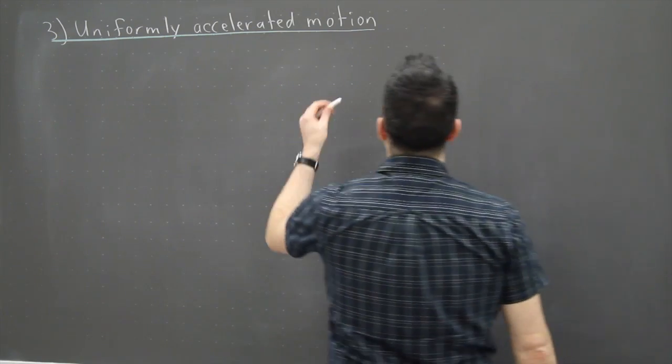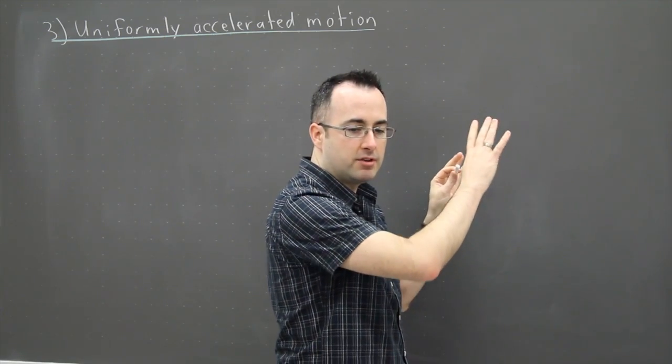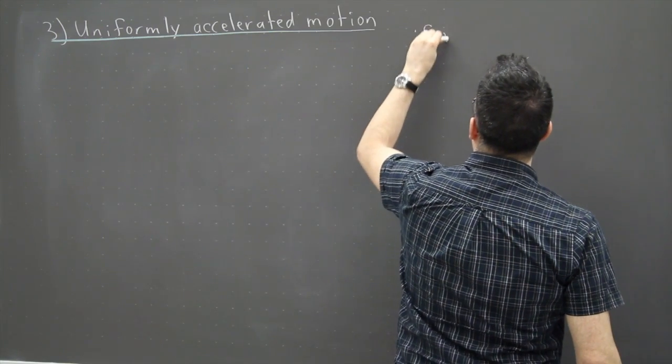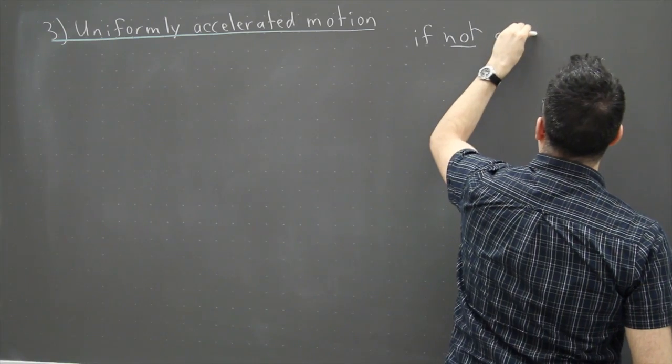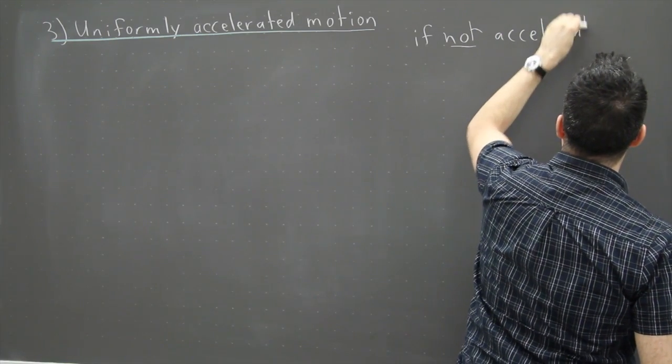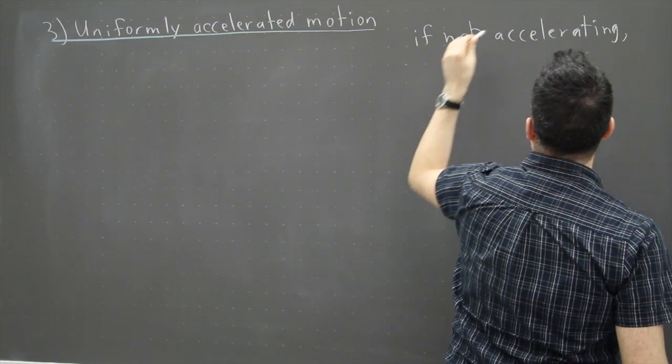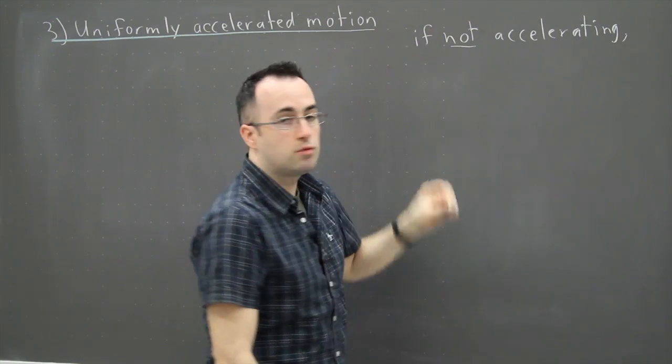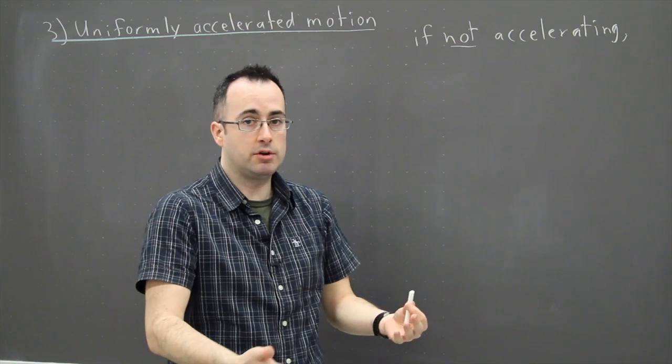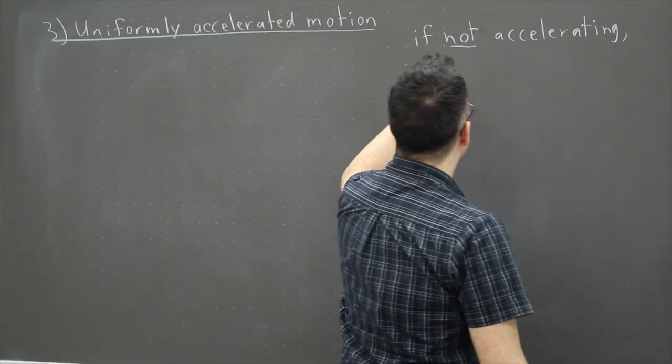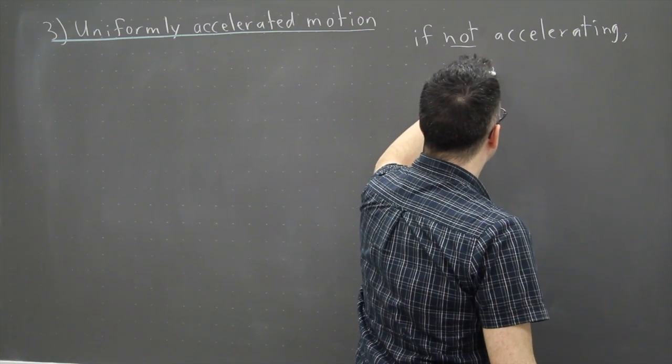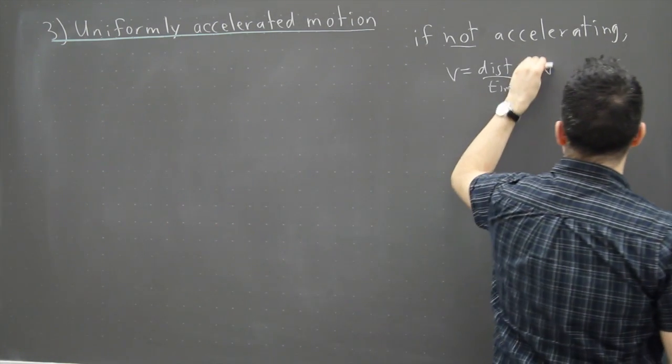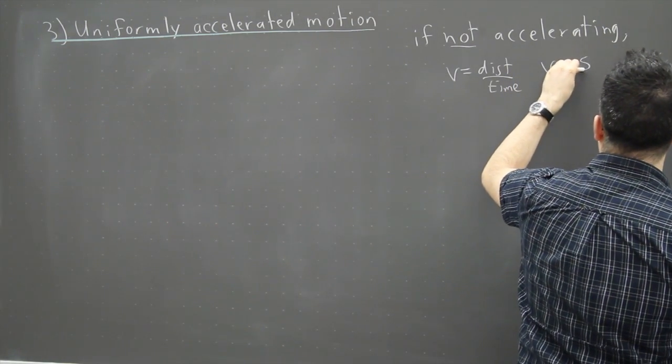So in that case right there, just to be a little bit clear here, I just want to write down a distinction. So if it is not accelerating, then it's actually really easy. If it's not accelerating, then you use just the regular equations of motion that you've probably learned a long time ago, which is that the speed is equal to the distance divided by the time. In this case we could say V equals S over T.